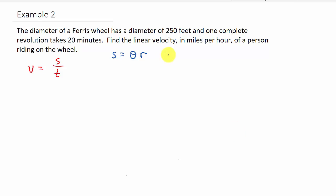So we know that the radius is 250 over 2, because we have to get S equals theta times R, which is 125, because they give us the diameter. And we need the radius, so the radius is half the diameter. And then we need theta. We need the angle.